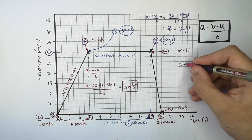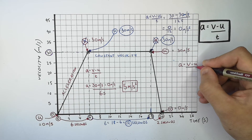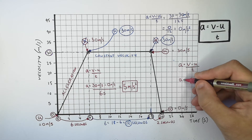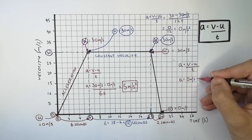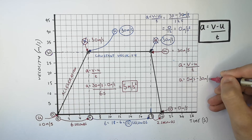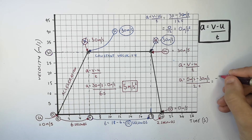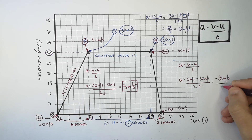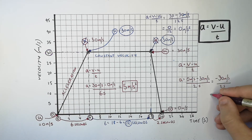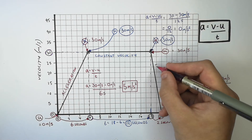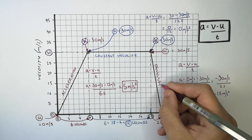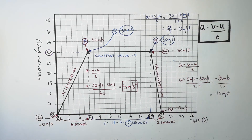To work out the acceleration, recall the equation a equals v minus u over t and substitute in the numbers. v is 0 metres per second minus the initial velocity u of 30 metres per second, divided by 2 seconds. The change in velocity is minus 30 metres per second, divided by 2 seconds, which gives an acceleration of minus 15 metres per second squared. This is a negative acceleration, which means the car is decelerating.